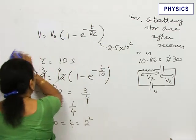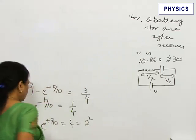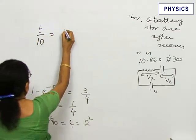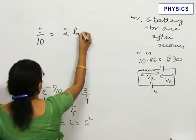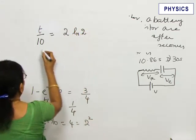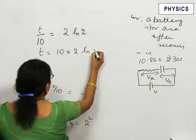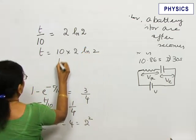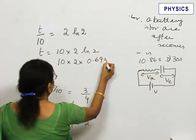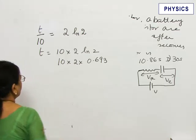Take logarithm on both sides. Taking logarithm on both sides we get t/10 equals 2 natural logarithm 2. This is 10 × 2 × ln 2, 10 × 2 × 0.693 which comes out to be 13.86.